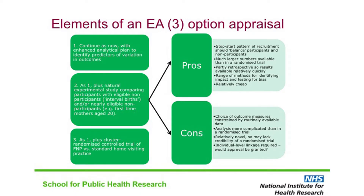For the appraisal of evaluation options, we considered three approaches in detail. The first was to use the monitoring information collected by the FNP unit with no additional collection or linkage of data. This would involve little extra cost, but lacking a comparator, we wouldn't get any direct estimate of the impact of the programme. The second option was to treat the FNP as a natural experiment and to link data identifying participants with data on all women who were eligible for the scheme but who gave birth at a time when there was no recruitment into the programme in their area. The key advantages are that we would get a large sample relatively quickly and cheaply.